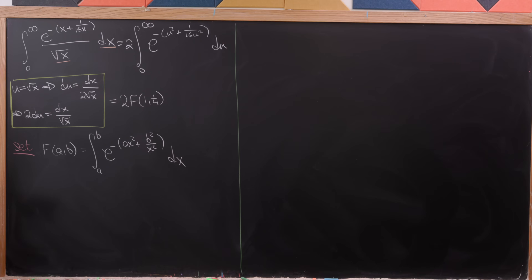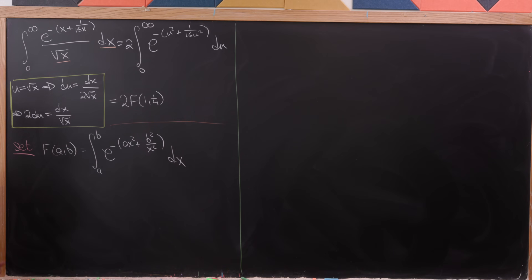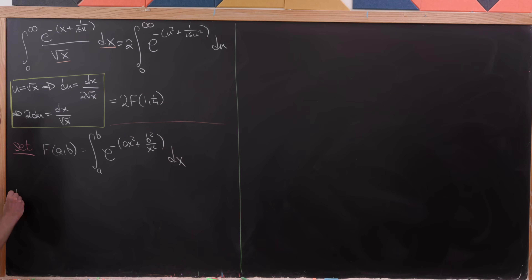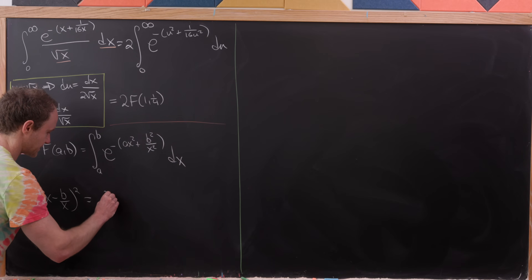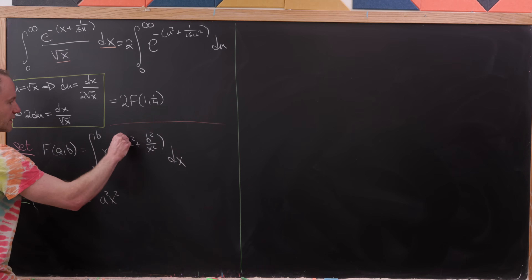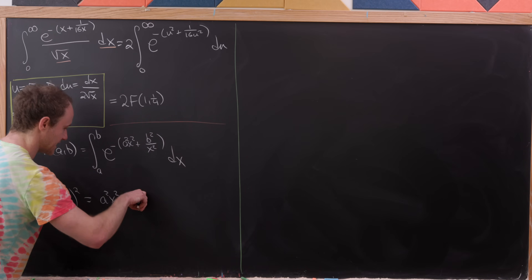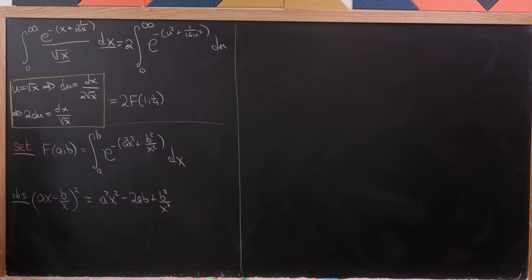Once we get a formula for f(a, b) we'll plug in those values. The key observation is that x times 1/x equals 1, so x squared and 1/x squared are separate. If we take a times x minus b over x and square it, we get a squared x squared minus 2ab plus b squared over x squared.